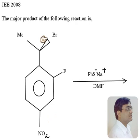Alkyl substitution is going to be favourable and Br should be replaced by PHS⁻. Now comes another question: will it be SN1 or SN2?